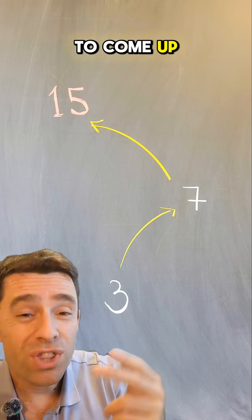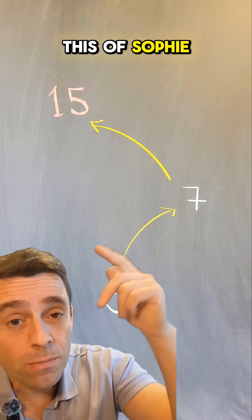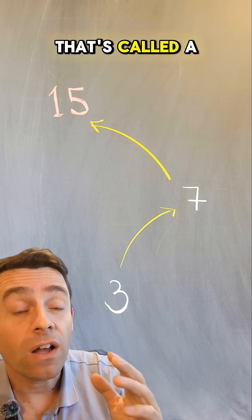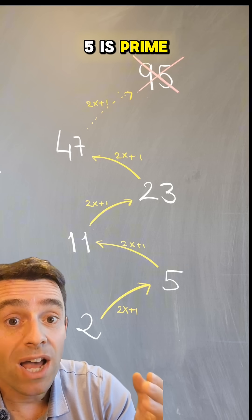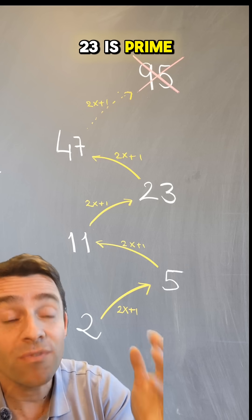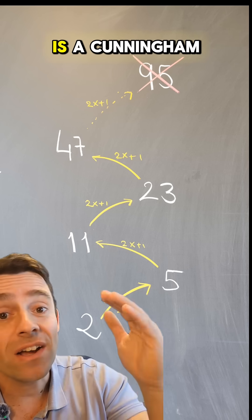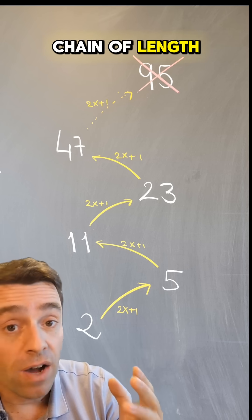When you try to come up with chains like this of Sophie Germain primes, that's called a Cunningham chain. For example, 2 is prime, 5 is prime, 11 is prime, 23 is prime, 47 is prime, but 95 is not prime. This is a Cunningham chain of length 5.